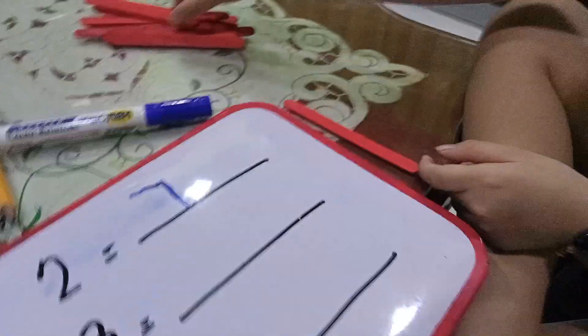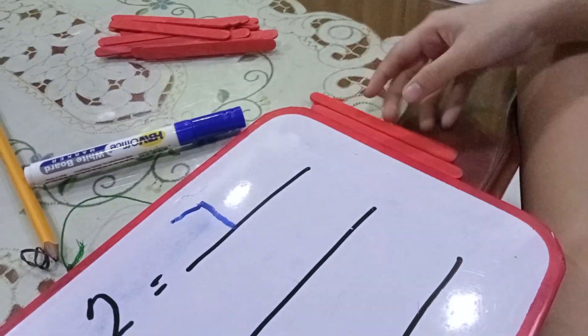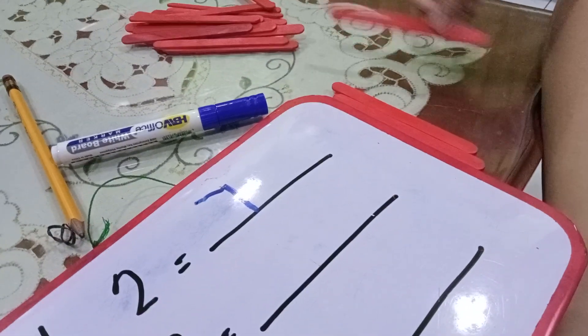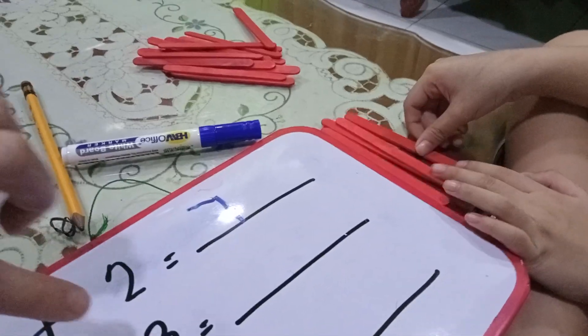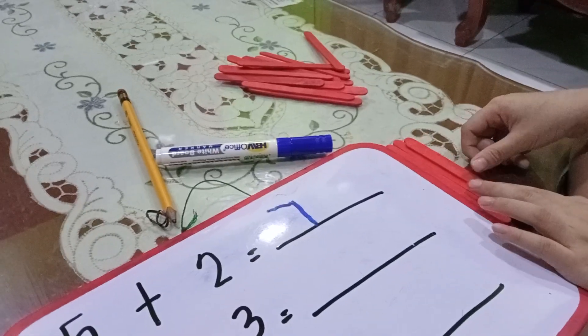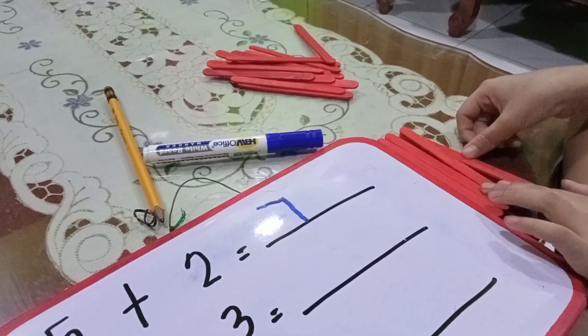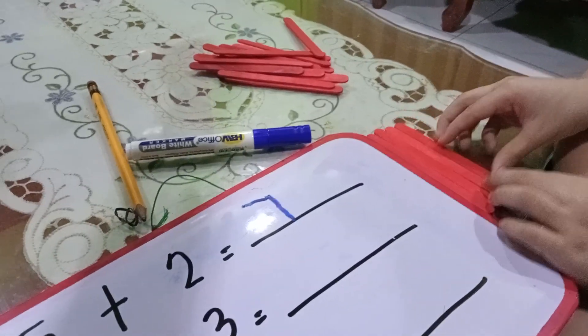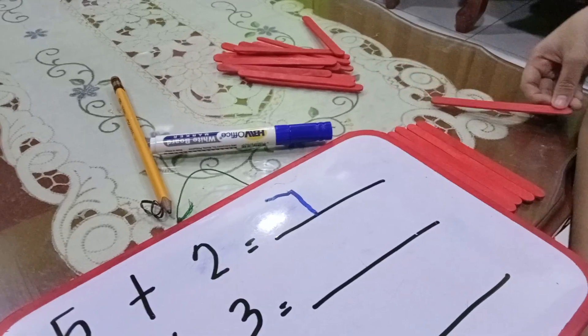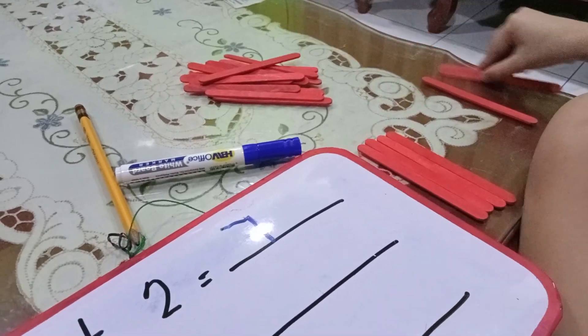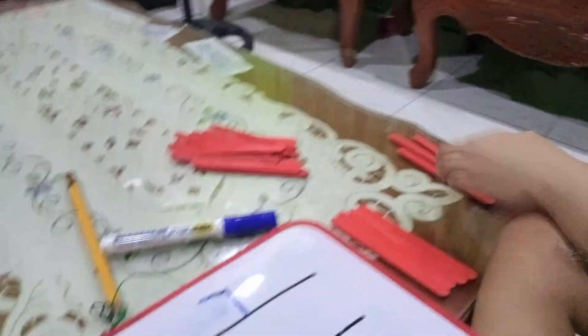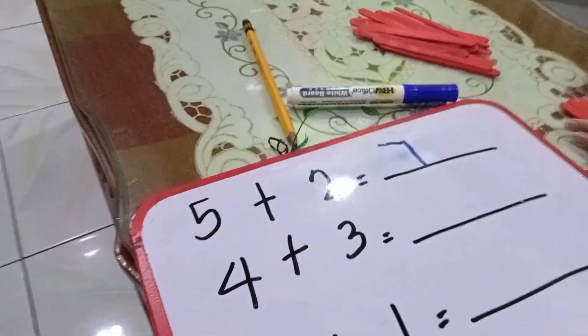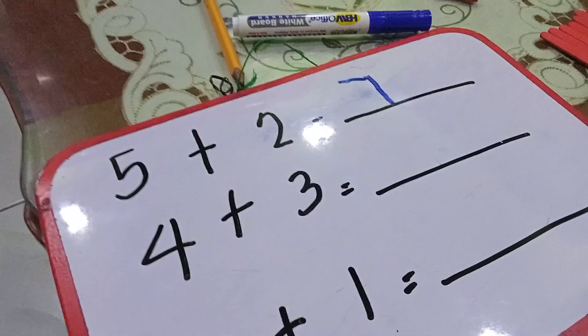Okay, good job. Four, then plus three, three popsicle sticks. There: one, two, three. Good job. Now join it together. You combine it. 4 + 3 so that you can write our answer.